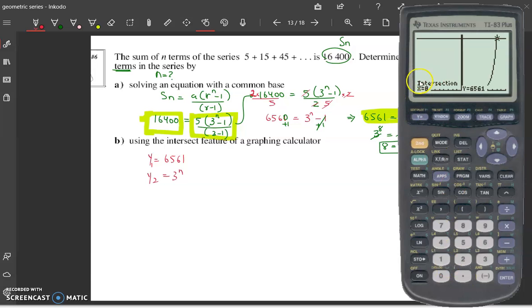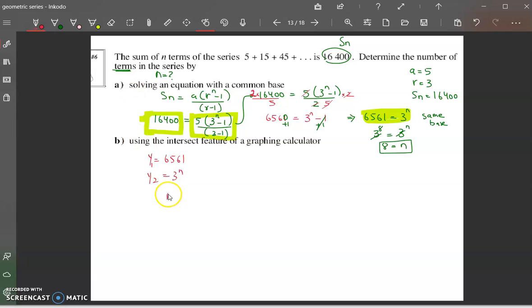So it solves for us. So we can tell that n here is 8 through the intersection method.